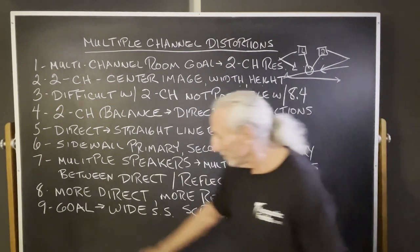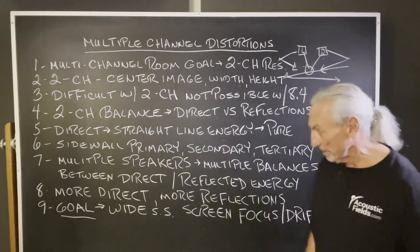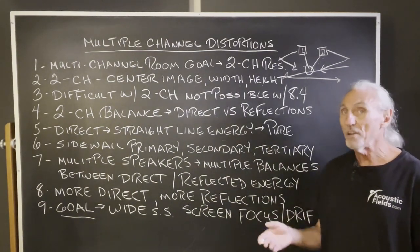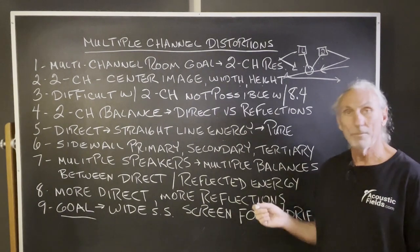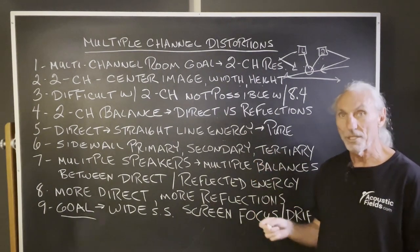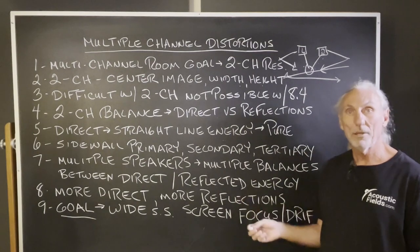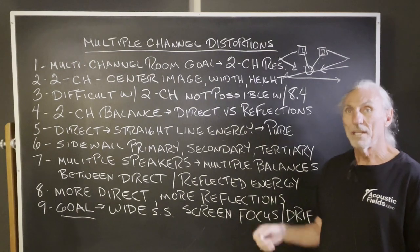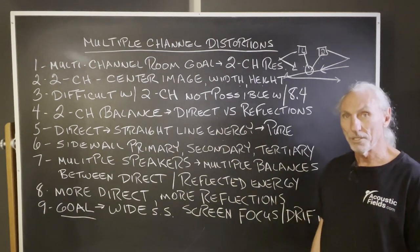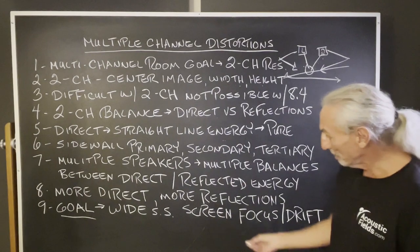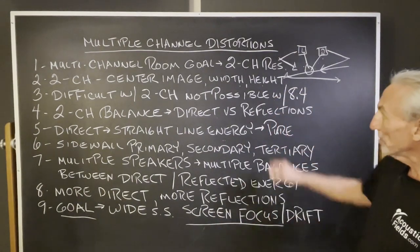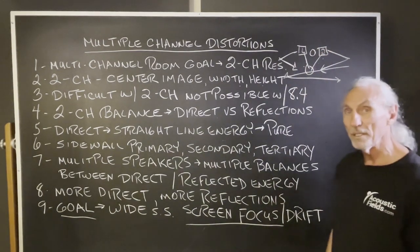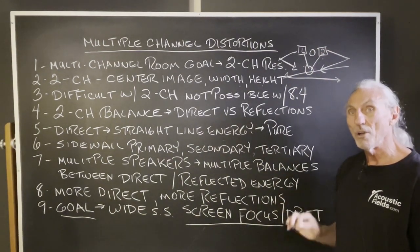So I think the goal revised for multiple channel systems is to get that screen focus. Get that image staying on the screen through a multiplicity of sources. You want to try acapella arrangements, you want to try live venues with full bands. Try all different kinds of source material and make sure that that screen focus, that image stays. Just like in two channel, we want the image to be strong in the middle. Well, we want the image to stay strong on the screen.